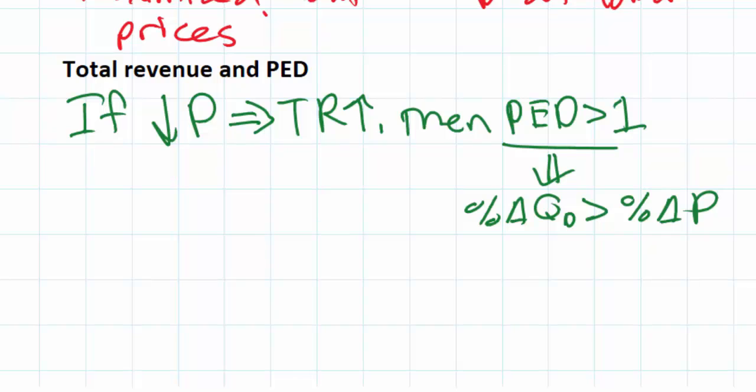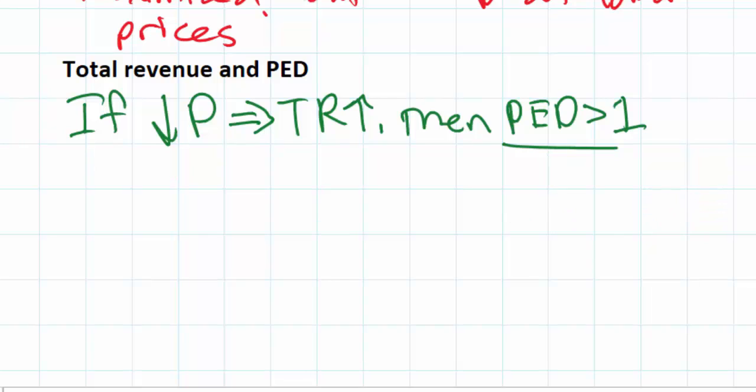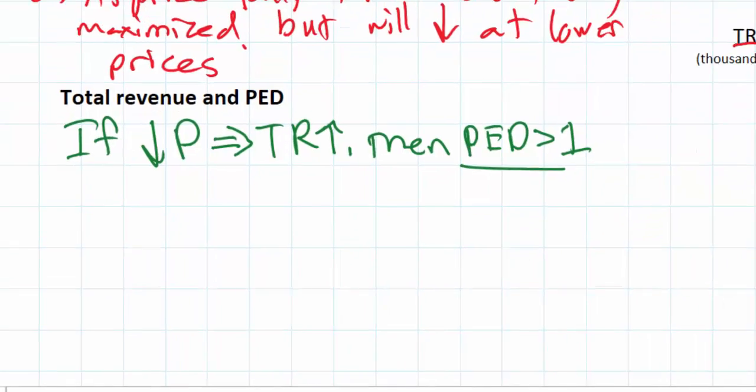Just think of an example here. If firms decide to lower their price by 10% but end up selling 20% more stuff as a result, this is going to increase those firms' revenues. If demand is elastic, then a decrease in price will cause total revenues to rise.